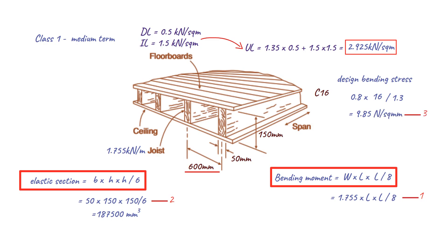We can calculate the bending moment by multiplying the design bending stress, 9.85 newtons per square millimeter, by the elastic section, 187,500 cubic millimeters. This results in a bending moment of 1,846,154 newtons per square millimeter, or 1.85 kilonewtons per square millimeter.